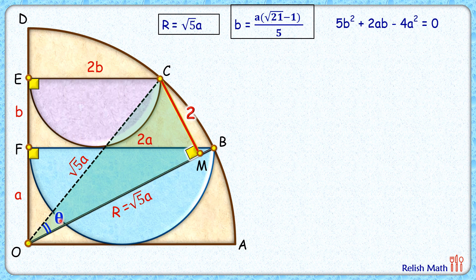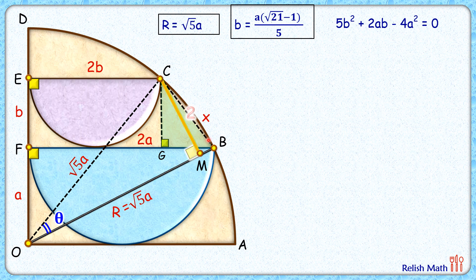To get the value of theta, let's join CB and consider triangle OBC. In triangle OBC we have OC = √5·a and OB = √5·a. If we can get the value of CB then by using the cosine law we can find theta. To get CB, let's drop a perpendicular from C onto FB, creating triangle CGB. If we can find CG and GB, we can find the hypotenuse CB, which we'll call x.